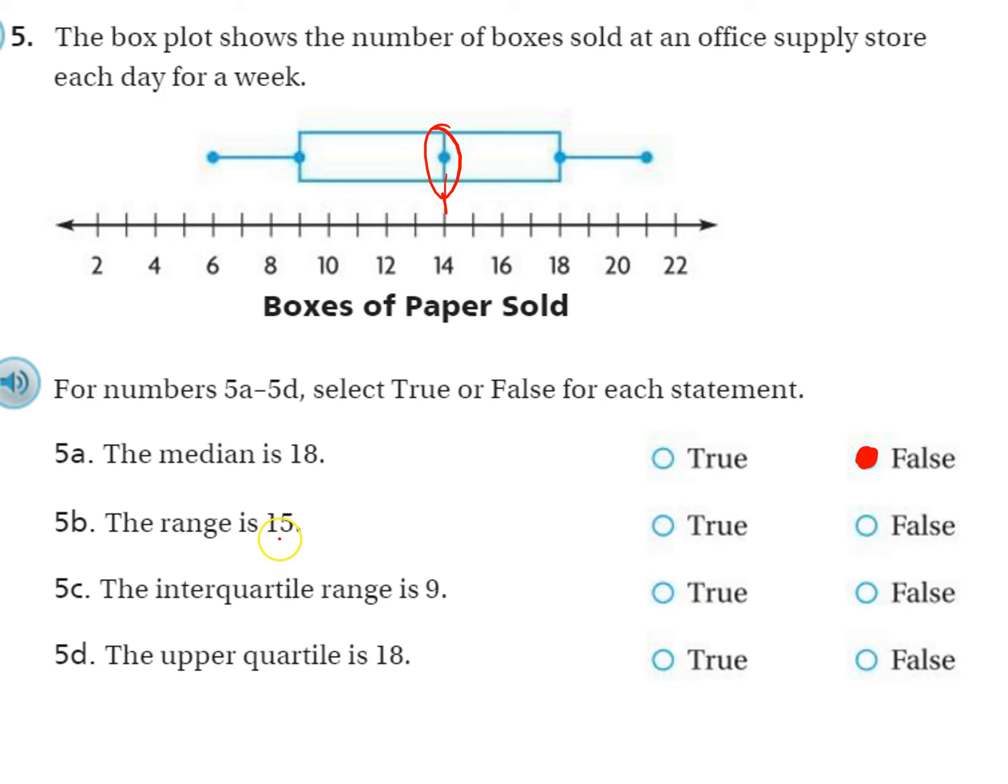The range is 15. To find the range, we take the biggest number, looks like it's right here, so that would be 21, and we subtract the least value, which looks like it's right here at 6. We subtract those out and we get 15, and that's what this says, so that is true.